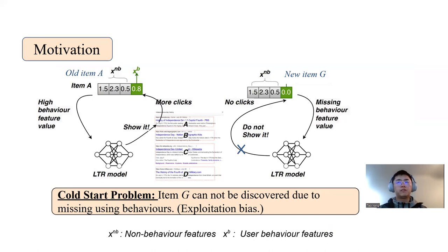Since behavior features are usually very strong signals for relevance, the ranking model will rely more on the behavior features, which means new items will usually be hard to discover. We name this exploitation bias, which means the Learning to Rank model exploits the behavior feature too much.